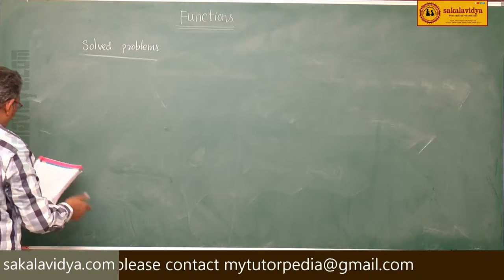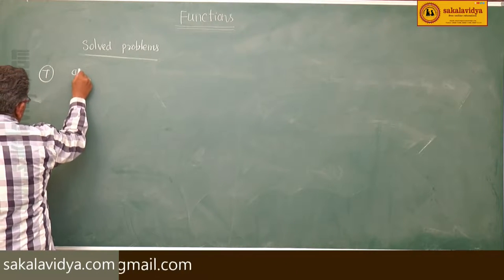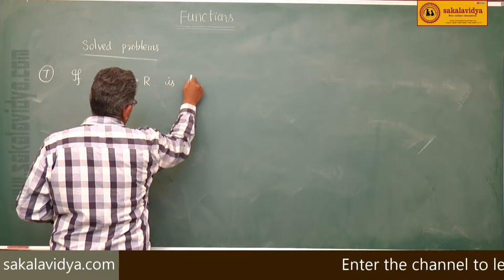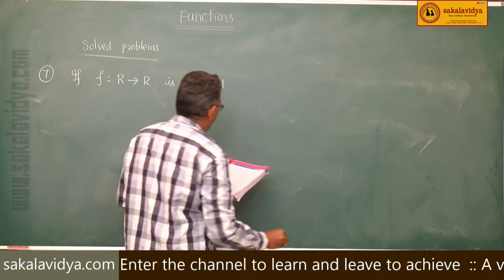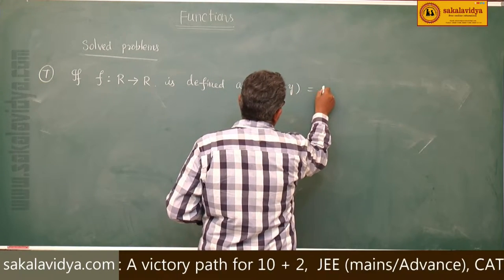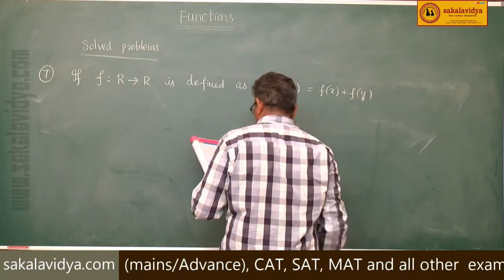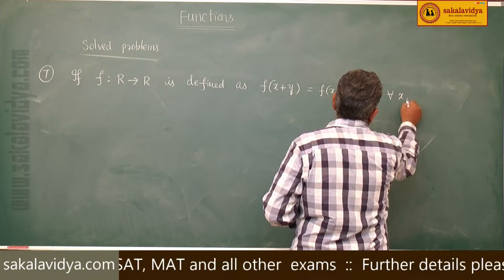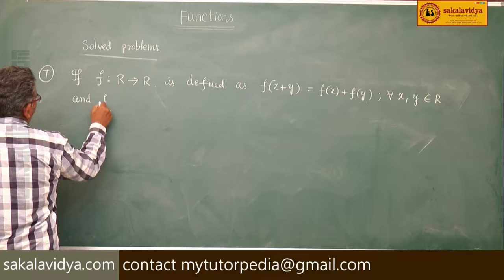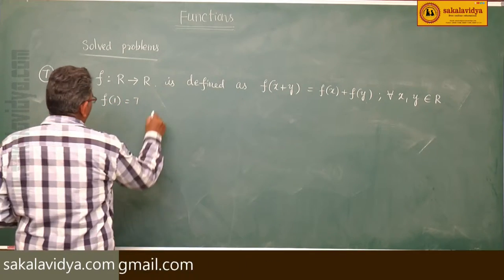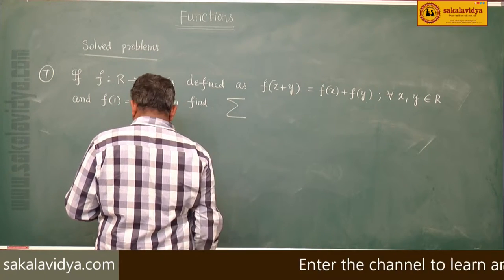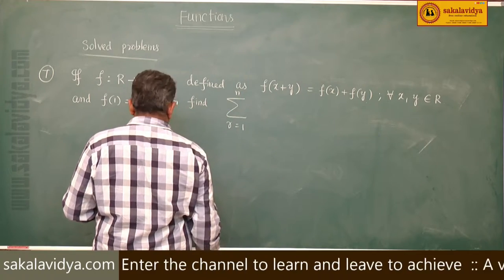Seventh problem. If f maps R to R is defined as f of x plus y equals f of x plus f of y for every x, y belonging to R, and f of 1 is equal to 7, then find sigma r equals 1 to n of f of r.